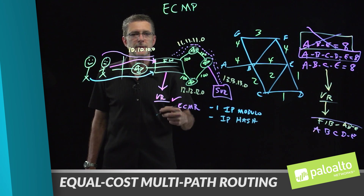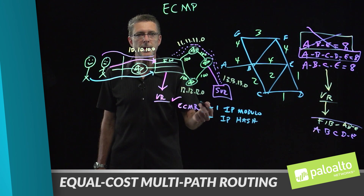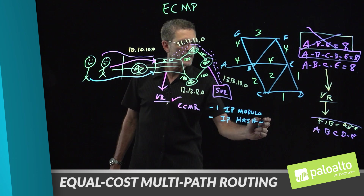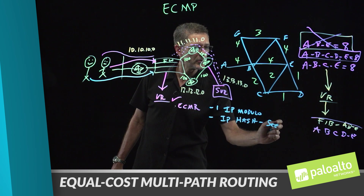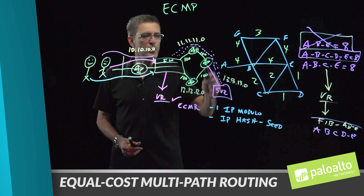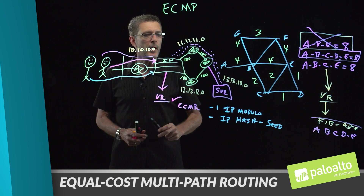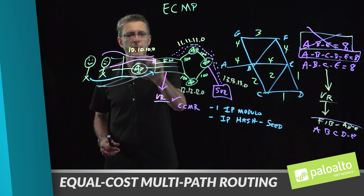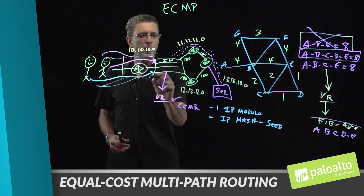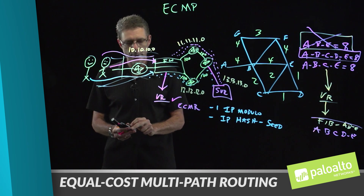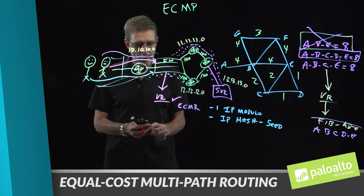IP hash allows you to use source and destination IP addresses as well as source and destination ports in the calculation. It also gives you the ability to add a hash seed value to get a more equally distributed balance across your links. As multiple sessions continue through the firewall, it will continue to load balance through the various links. Those are the two common options: IP modulo and IP hash.